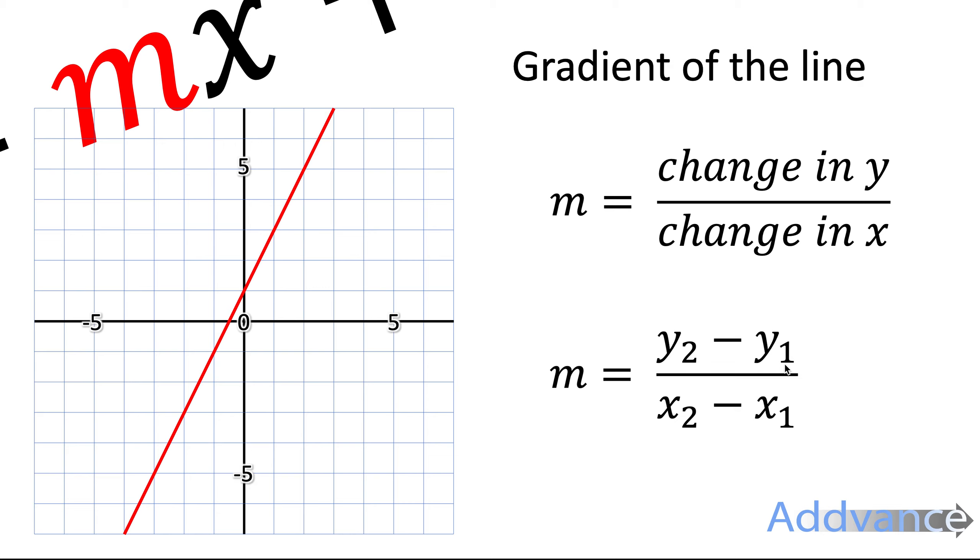These small letters, small numbers here, represent, tell us which way the coordinates go. I'll show you what this means in a moment with an example.